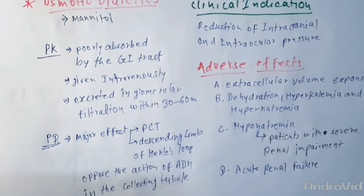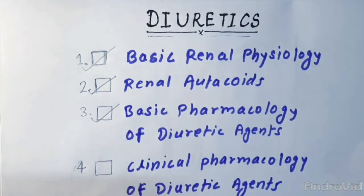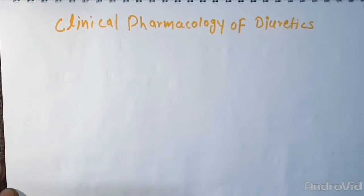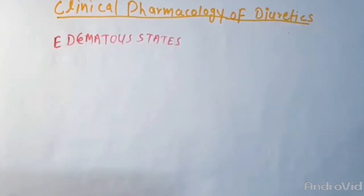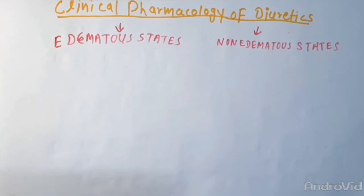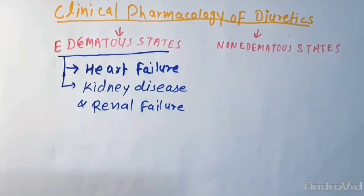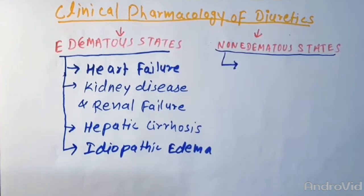So with this we have completed our third part of the discussion. Now we are going to discuss the fourth part, the clinical pharmacology of diuretics. Sometimes short notes are asked from these topics. First we will discuss the edematous states, then the non-edematous states. This includes the discussion of heart failure, kidney disease and renal failure, hepatic cirrhosis, and idiopathic edema.